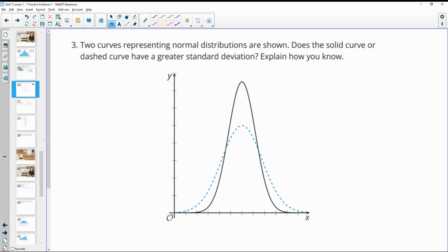Number three. Two curves representing a normal distribution are shown. Does the solid curve or dashed curve have a greater standard deviation? Standard deviation is like the width of the curve because it's how spread out the data is. The greater width is going to be the one with greater standard deviation, so in this case, the dotted because it's wider.